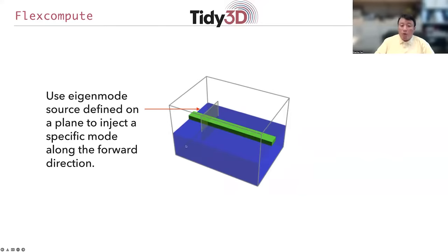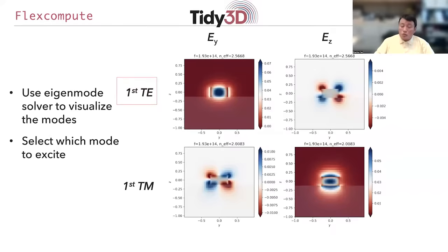So for a waveguide that looks like this, you can use an eigenmode solver to solve for the guided mode of the waveguide. For this particular waveguide...